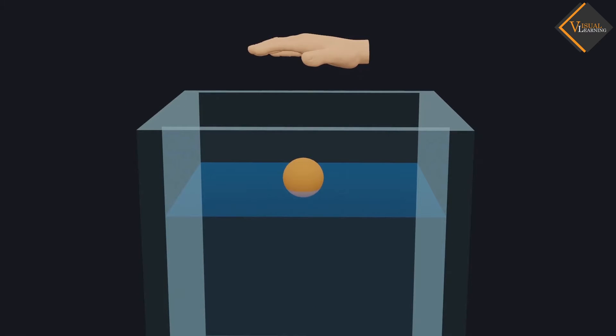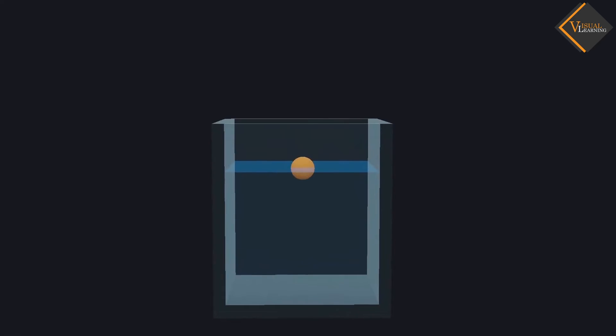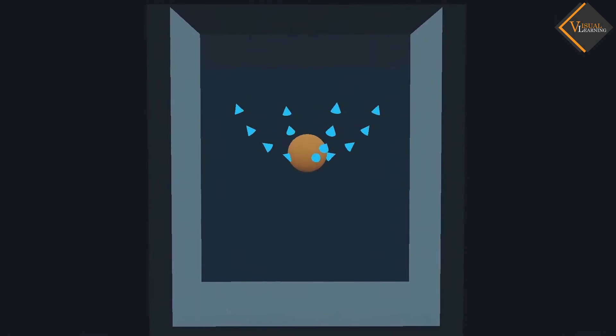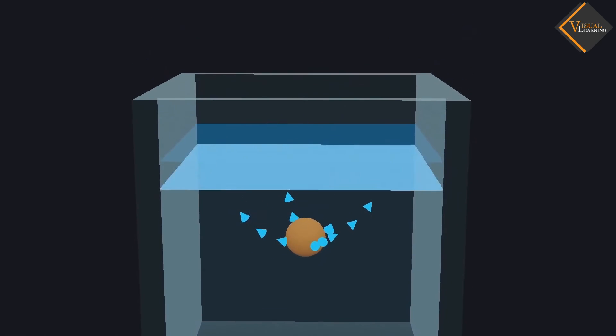Let's understand this through animation. When we try to immerse the ball into the water, the ball displaces some water which is equal to its volume. And because of that, the water level increases.